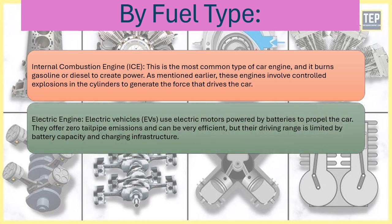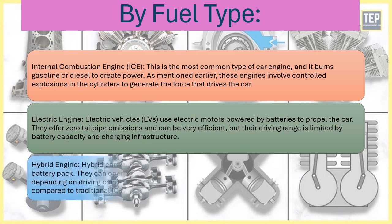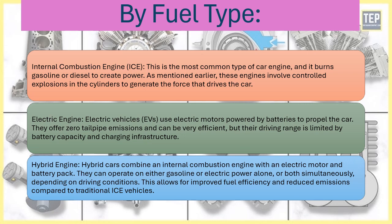Electric engine — electric vehicles (EVs) use electric motors powered by batteries to propel the car. They offer zero tailpipe emissions and can be very efficient, but their driving range is limited by battery capacity and charging infrastructure.